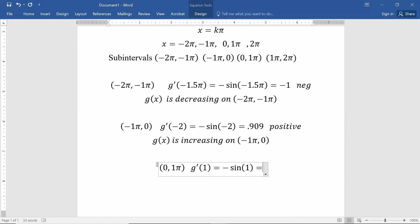I type that into my calculator and I get a negative 0.8415. Again, the interesting part about that is that it's negative, which means that g of x is decreasing on the interval from 0 to 1π.